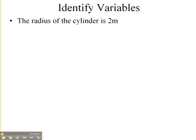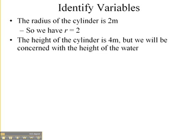First thing we're going to do is identify our variables. The radius of the cylinder is 2 meters, so let's call the radius r, and then we have r is 2. The height of the cylinder is 4 meters, but the height of the cylinder is not really what we're talking about. We're actually concerned with the height of the water.